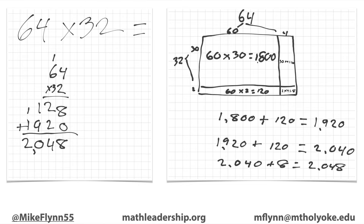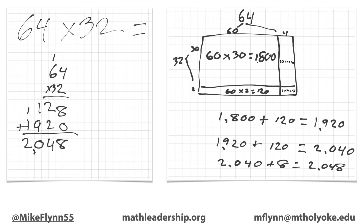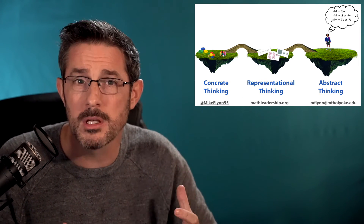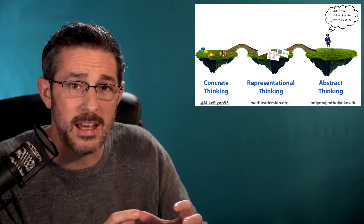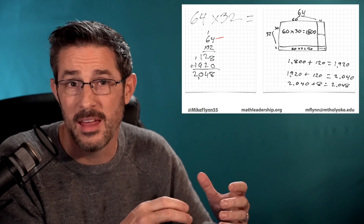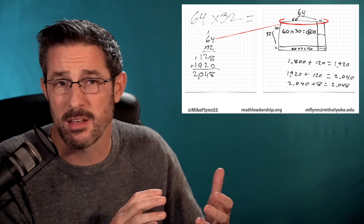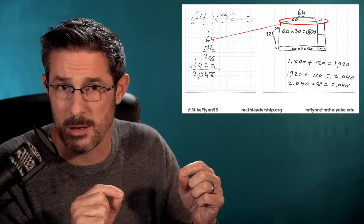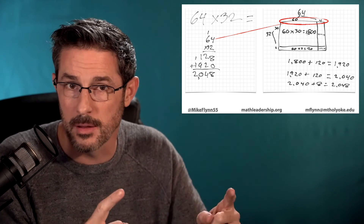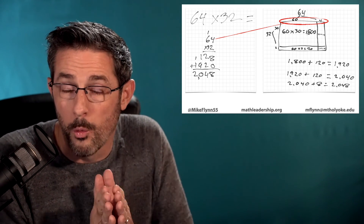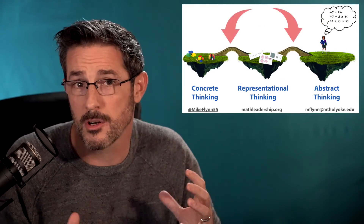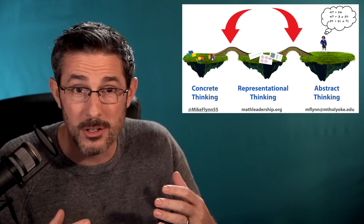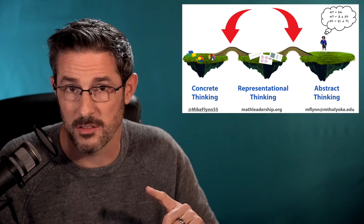If you give a problem to the class and you have some kids who approach it abstractly, some with a representation, and some doing a concrete model, what's great is that as you come together to discuss these ideas, you can have the kids build those connections. You might ask, 'Can you show me where is the 64 in Julian's model?' or 'In Sarah's representation, can we see where the decomposing of numbers happened?' As we ask kids to start building those connections, that's the bridge building. Being a good math teacher means you're a good bridge builder — helping kids see the connections among all of these ideas.